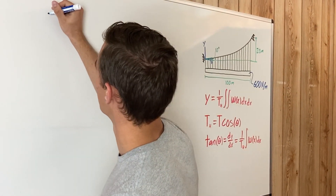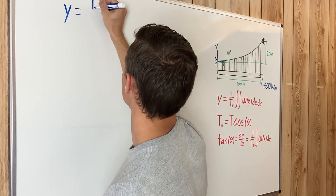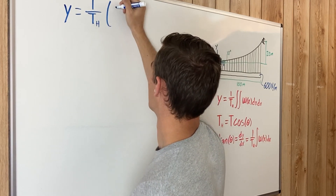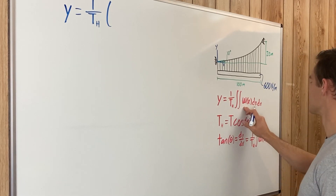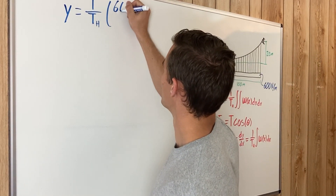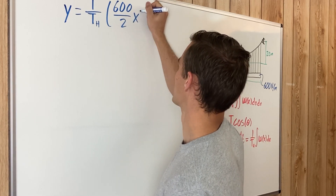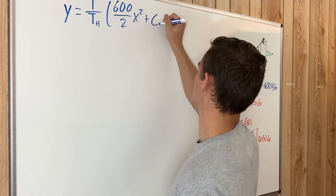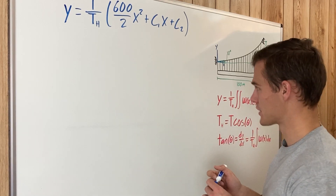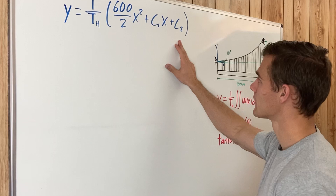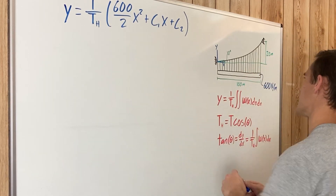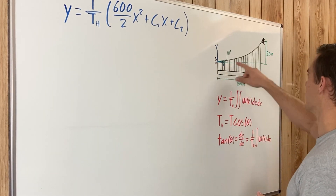After double integration, the equation becomes: y = (1/Th) × [(600/2)x² + C1·x + C2], where Th is the horizontal component of tension, 600 N/m is the constant distributed load, and C1 and C2 are constants of integration. This function gives us the parabolic shape of the cable curve.